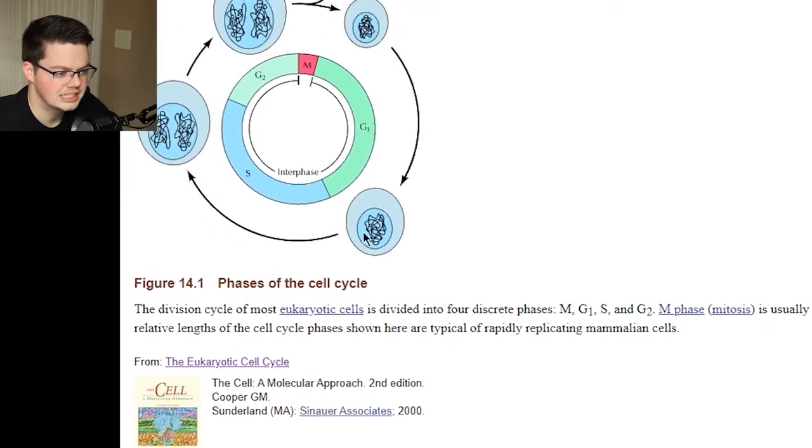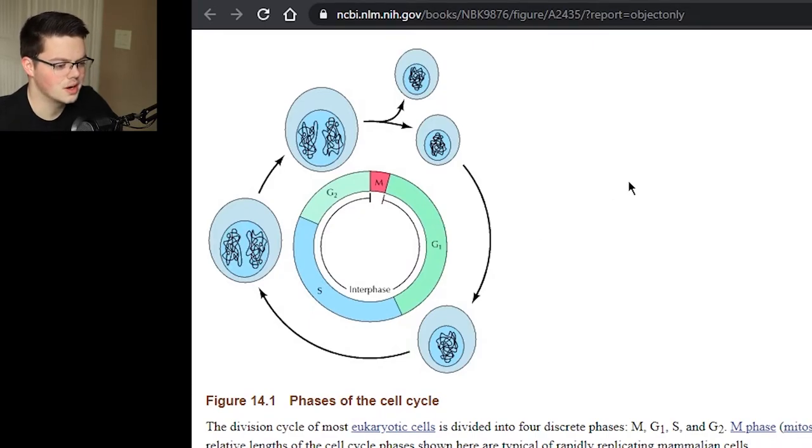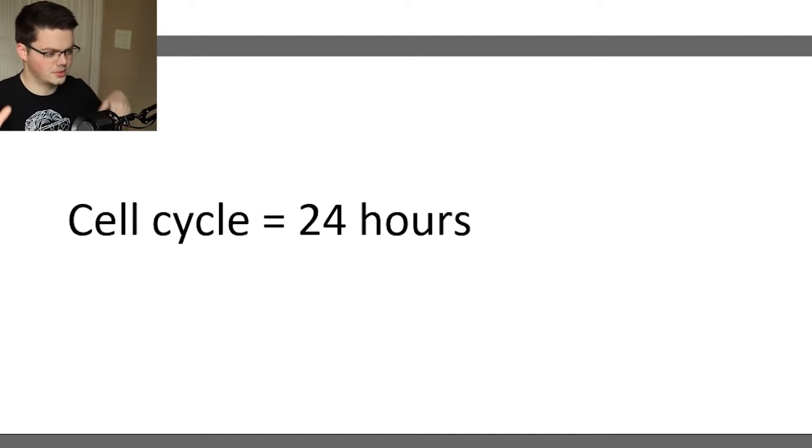It would take a day for each cell to divide and make a new one, but would the next cell divide immediately? This is way more complicated than I thought. I could just leave it at 24 hours but I want it to be accurate. Let me look at the phases of the cell cycle. G phase is where the DNA splits — I remember this from high school and college biology. M phase is where it splits. So the cell cycle equals 24 hours. That's our number.